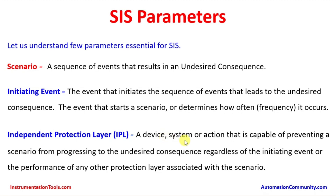An Independent Protection Layer is a device, system, or action capable of preventing a scenario from progressing to the undesired consequence, regardless of the initiating event or the performance of any other protection layer. There are multiple protection layers in a process plant: the BPCS system and operator action, alarm, safety instrumented system, pressure relief valve, rupture disc, mechanical safety devices, plant dykes, and community alarm. Each one acts independently — that is why it is called an independent protection layer.